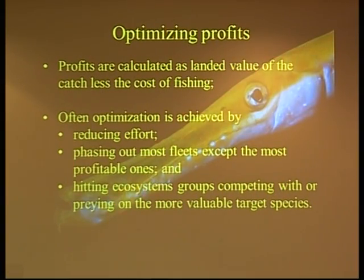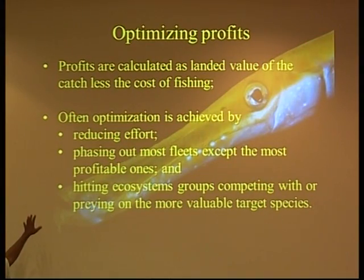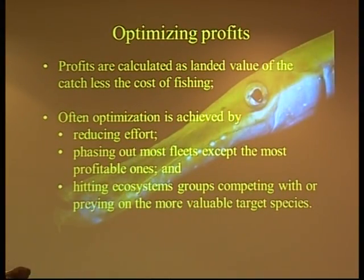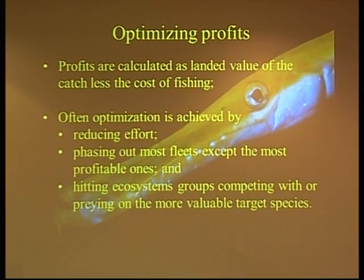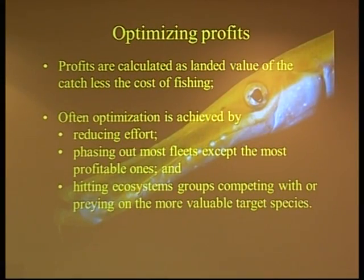The system ends up competing and operating on target species. So if this is your goal, these are the kinds of things we see when you run models again and again. You say the whales eat our salmon, and there's more value in whales than in salmon, so go after the whales so we can get more salmon to sell and make more money.